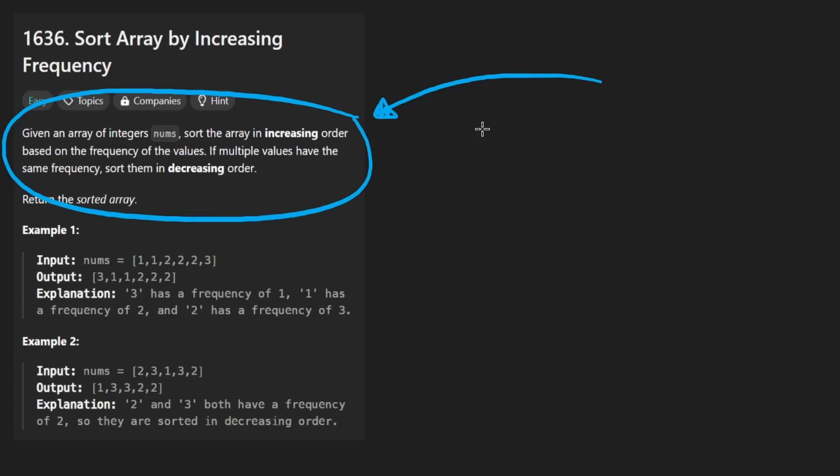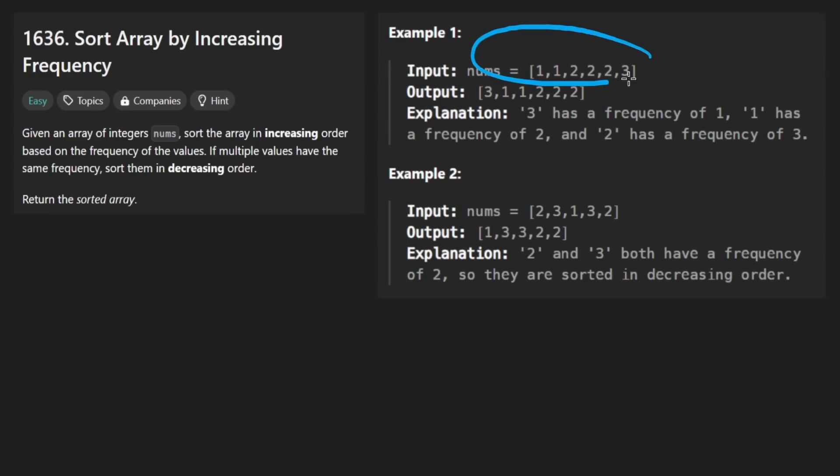So first let's get into what the problem is asking because it's not super trivial. The idea is we're given an array something like this. Every single one of these numbers has a frequency. So one has a count of two, it appears two times in the input array. Two shows up three times and three shows up a single time. So instead of sorting the input based on the values themselves, we want to sort each value based on the frequency of that value.